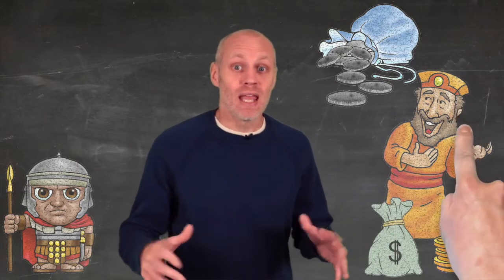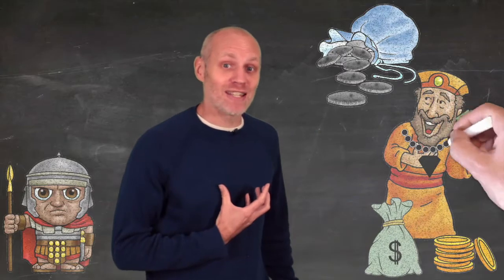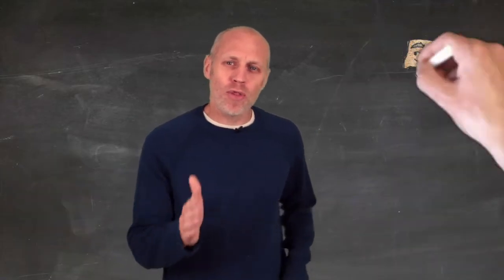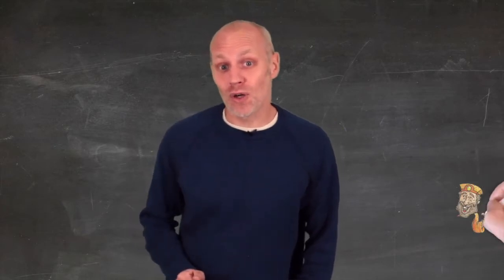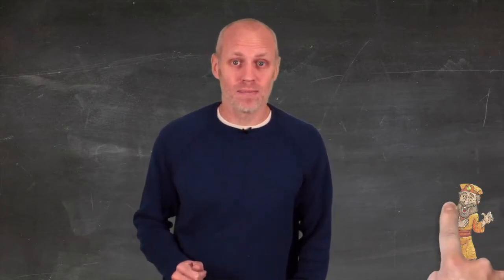And he was rich. He wore fine clothes and probably had bling around his neck. One more thing you need to know about this guy called Zach is that he was also very short. He would not have made the school basketball team.